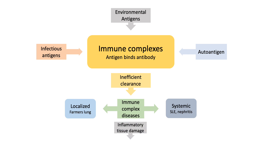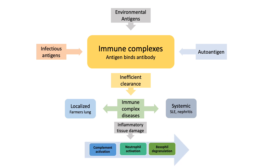These deposited immune complexes, locally or systemically, may lead to inflammatory tissue damage, mediated by complement activation, neutrophil attraction or chemotaxis that leads to local damage, and basophil degranulation. One important mediator is histamine, which causes vasodilation and helps in the deposition of immune complexes in the basement membrane of vessels and the kidney glomeruli.